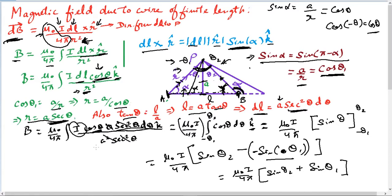And that is your expression for finding the magnetic field at a point P at a perpendicular distance of a from the wire. The full expression is B equals mu naught I over 4 pi a, multiplied by the quantity sine of theta one plus sine of theta two, where a is the perpendicular distance from the point to the conductor.